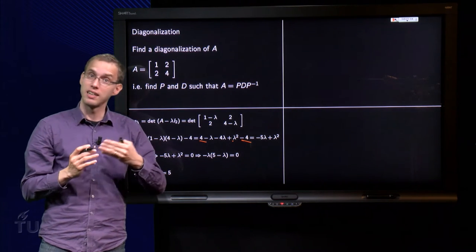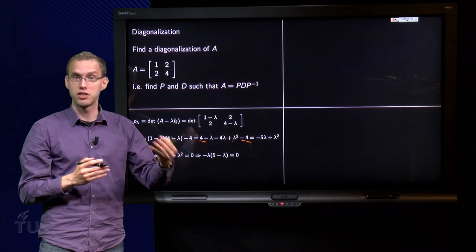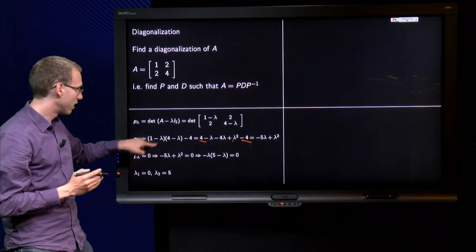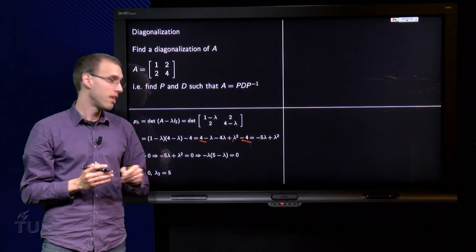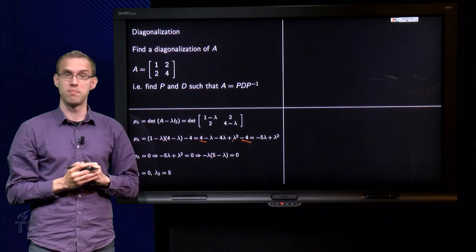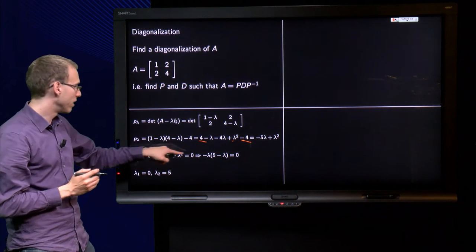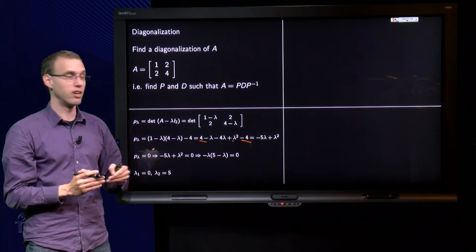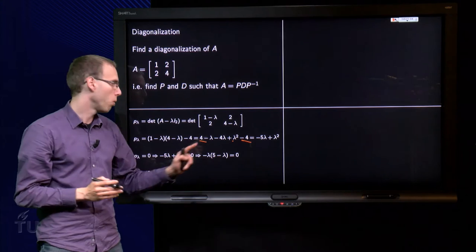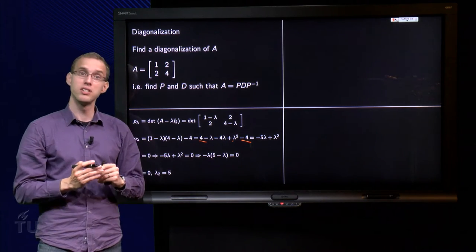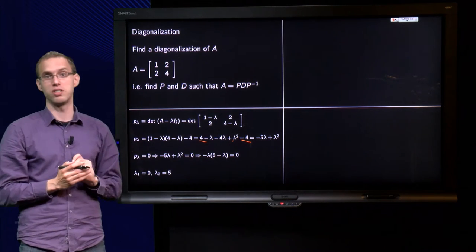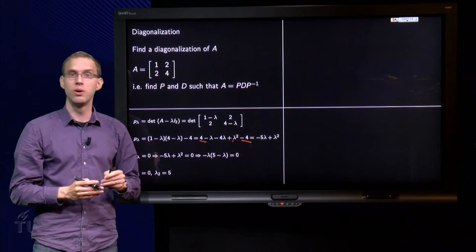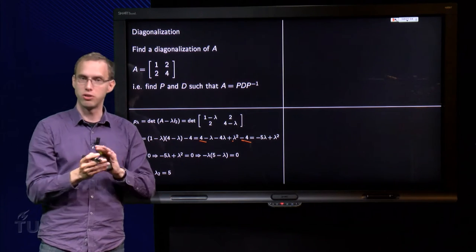In order to find the eigenvalues we have to set the characteristic polynomial to zero, so we get the characteristic equation. You can factor out a factor minus lambda, so we find minus lambda times 5 minus lambda equals 0. This is 0 if either lambda equals 0 or if lambda equals 5, so the eigenvalues are lambda 1 equals 0, lambda 2 equals 5, or you can reverse the order, that doesn't matter.